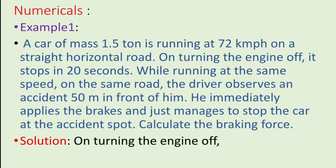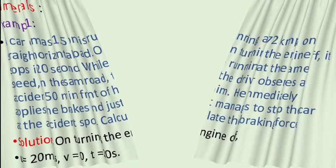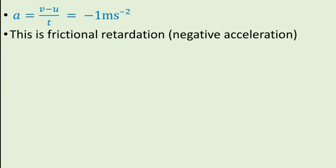Solution on turning the engine off. Initial velocity U is equal to 20 meter per second. Final velocity V is equal to 0 meter per second. And time t is equal to 20 seconds. Now, formula for acceleration A is A is equal to V minus U upon t. After substituting the given values, we get A is equal to minus 1 meter per square second. This is friction retardation, that is negative acceleration.